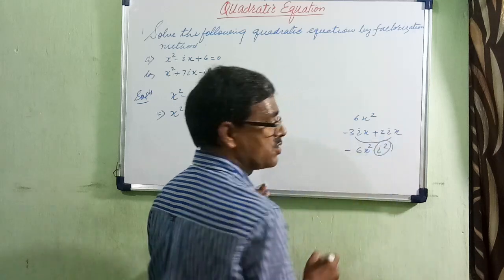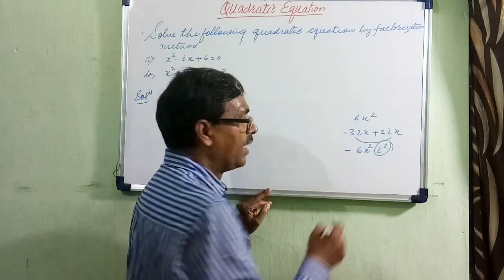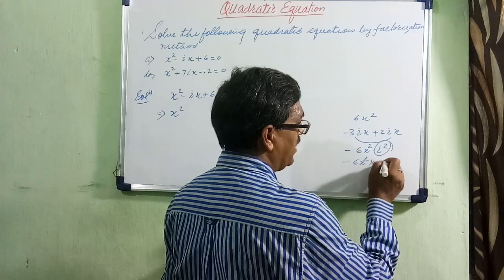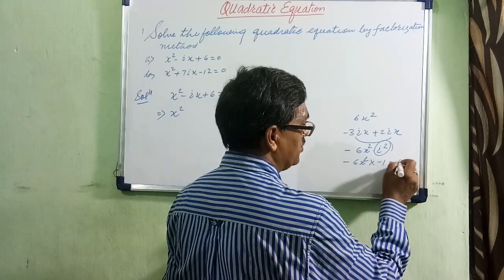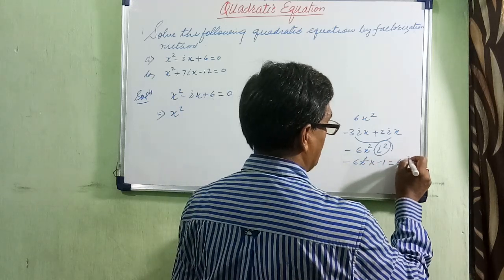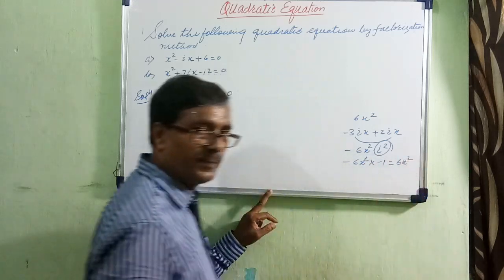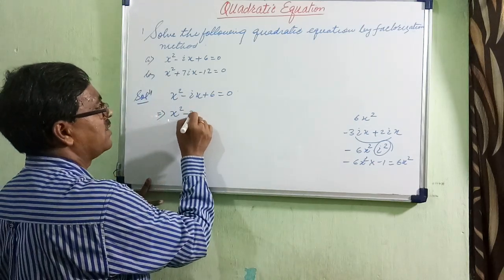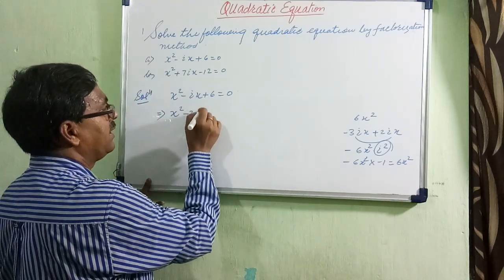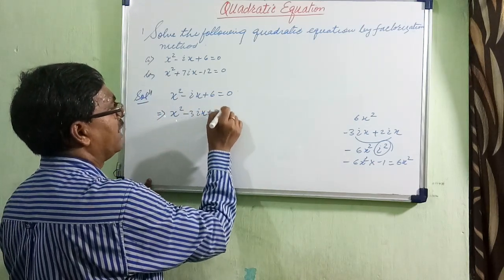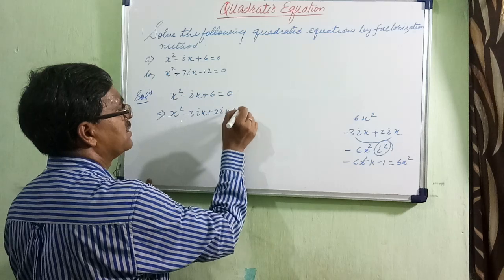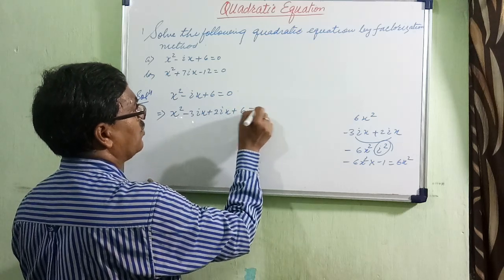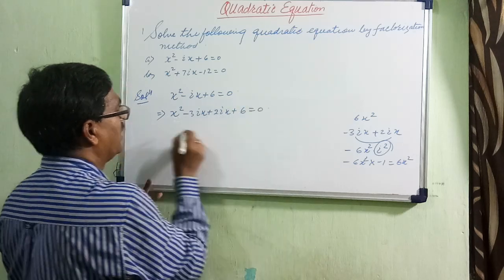And i squared is equal to minus 1. So, minus 6x squared into minus 1 is equal to plus 6x squared. And therefore, we have x squared minus 3ix plus 2ix plus 6 is equal to 0.